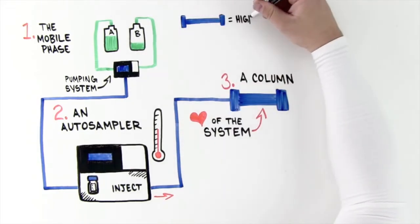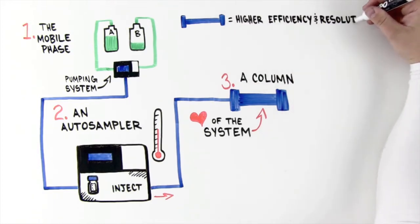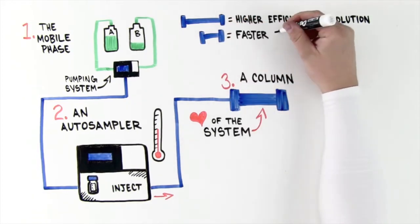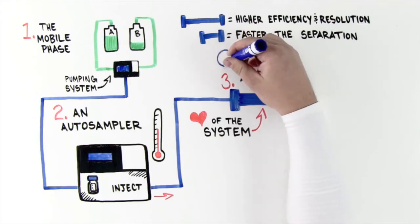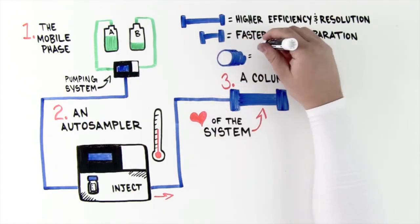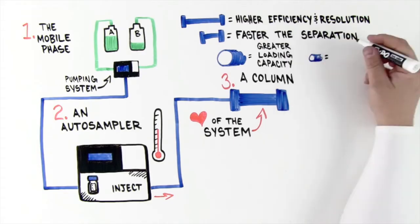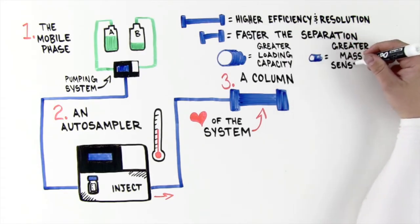The longer the column, the higher the efficiency and resolution. The shorter the column, the faster the separation. Also, the larger the column diameter, the greater the loading capacity, while the narrower the column, the greater the mass sensitivity.